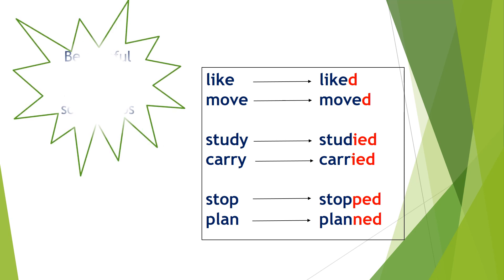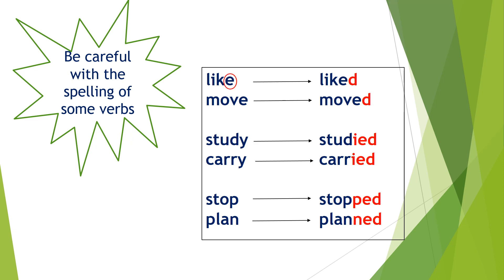Be careful with the spelling of some verbs. Keep in mind: for regular verbs ending in the vowel -e, add just -d. For example: like → liked, move → moved. We also need to pay extra attention for regular verbs that end in a consonant plus -y. Here, we change the -y into -i and add -ed.